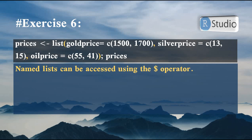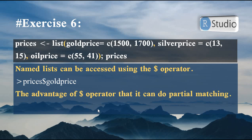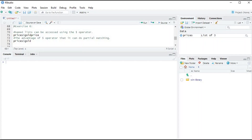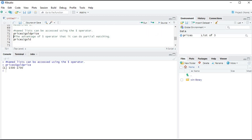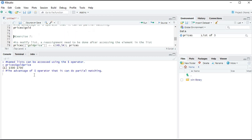If elements in the list are named, you can access them using the dollar operator: write the list name followed by a dollar sign and the element name, e.g. list$gold_price. The advantage of the dollar operator is that it supports partial matching — writing just 'gold' will return gold price values. Running this in RStudio gives 1500 and 1700, and using just the partial name 'gold' gives the same output.